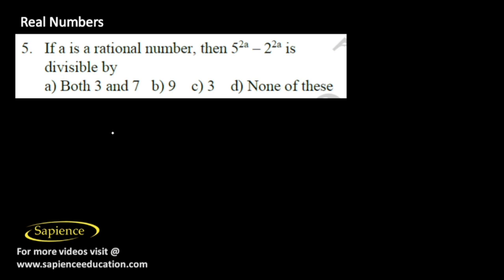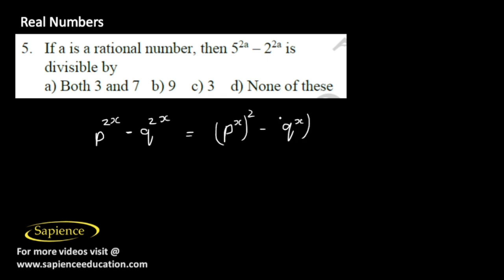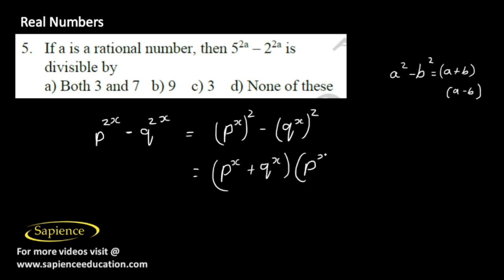If a is a rational number, then 5 to the power 2a minus 2 to the power 2a is divisible by which numbers? This can be represented as P to the power 2x minus Q to the power 2x, which equals (P to the power x) squared minus (Q to the power x) squared. Using A squared minus B squared equals (A plus B)(A minus B), this becomes (P to the power x plus Q to the power x) into (P to the power x minus Q to the power x).